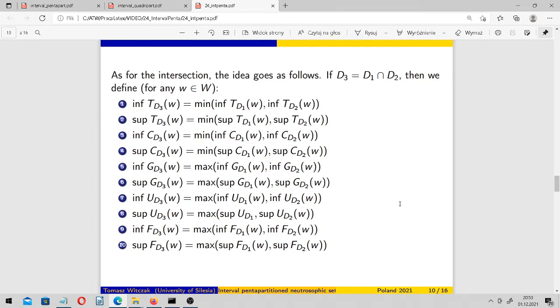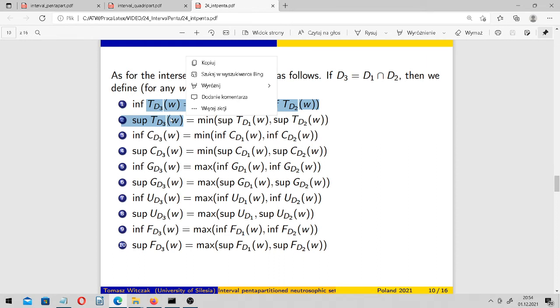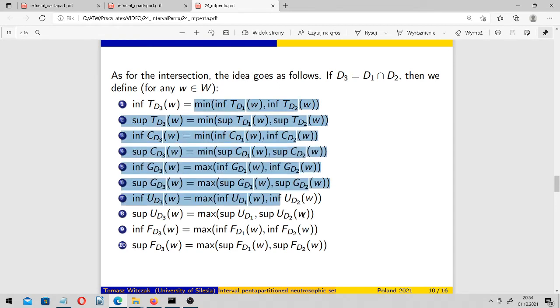As for the intersection, the idea goes as follows. If D3 is an intersection of D1 and D2, then we define lower and upper limits, infima and suprema of truth intervals of D3, of intervals of D3, truth interval, contradiction interval, and so on. We define them in the following way.